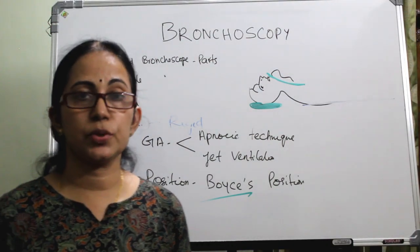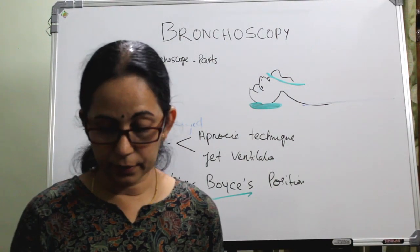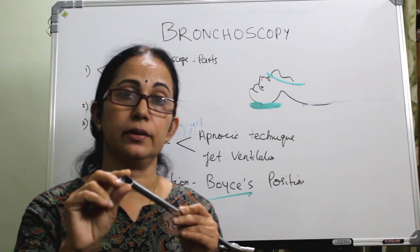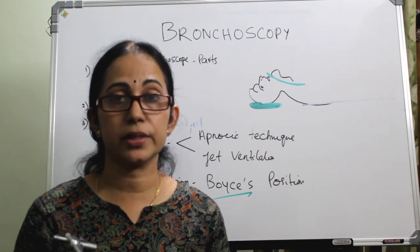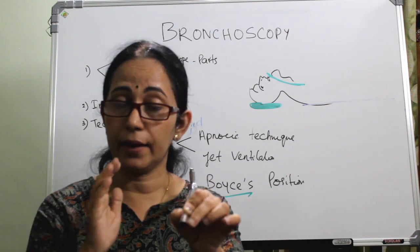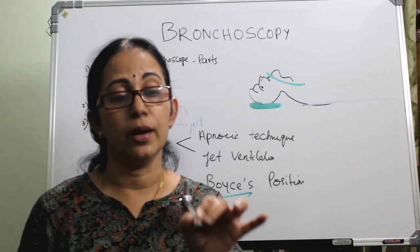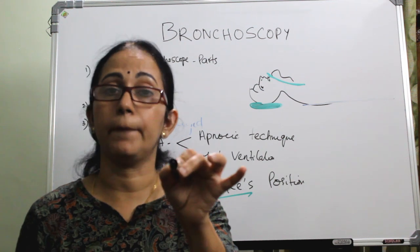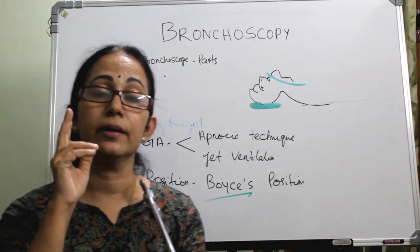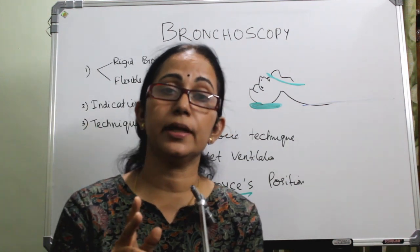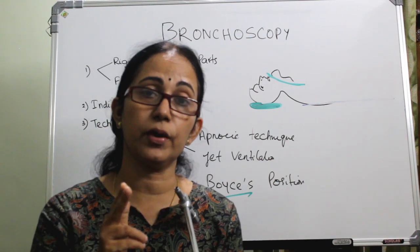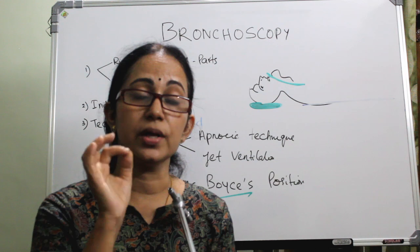Regarding the steps of rigid bronchoscopy: the patient is placed in Boyce's position. First, lubricate the tip of the bronchoscope with silicone jelly. In ENT, every instrument is held in the non-dominant hand like a pen. The dominant hand is used for instrumentation — including forceps for foreign body removal and suction.